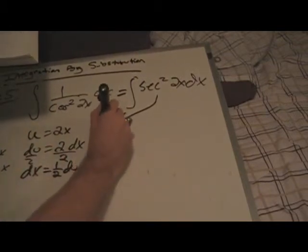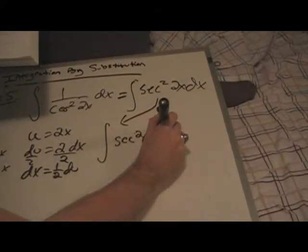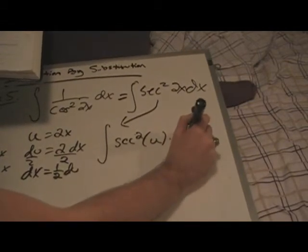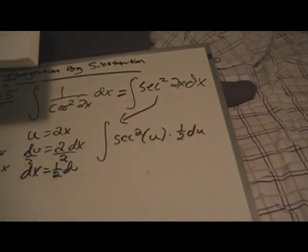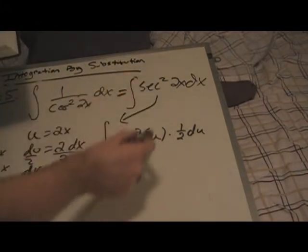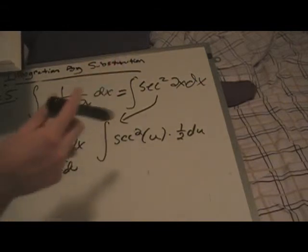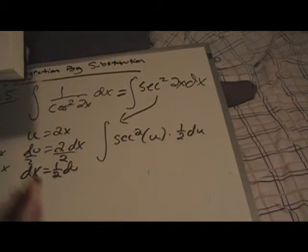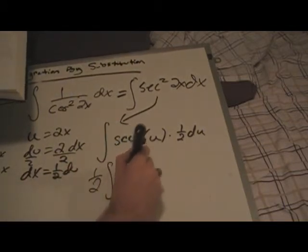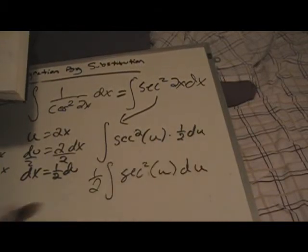And then, we get the problem. Secant squared of u times 1 half du. That's simply plugging in u and what we know as dx to be, which is 1 half du. And look, we have our constant multiple rule buddy back. So, let's move it back out to the front and do secant squared of u du.